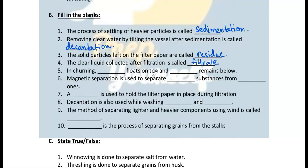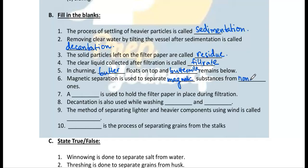Number 5: In churning, butter floats on the top and buttermilk remains below. Number 6: Magnetic separation is used to separate magnetic substances from non-magnetic ones.